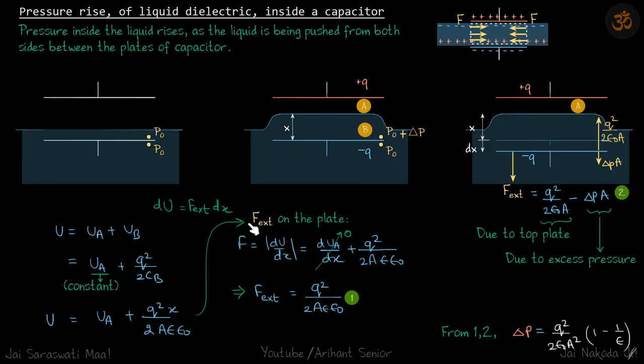Now it's time to find the f external by differentiating it. We know that change in potential energy is f external into dx, where f external is on the plate, not on the dielectric. So f is du by dx. This term will be zero, and it's a linear function of x, so this becomes q squared by 2a epsilon epsilon naught. Finally, we are going to equate this to this, and everything is known to us.